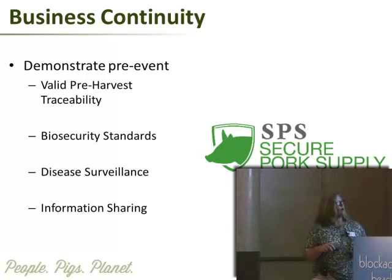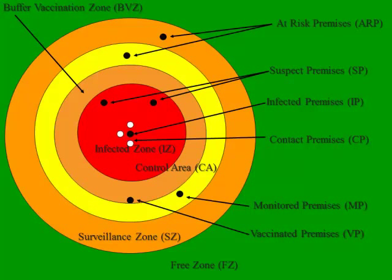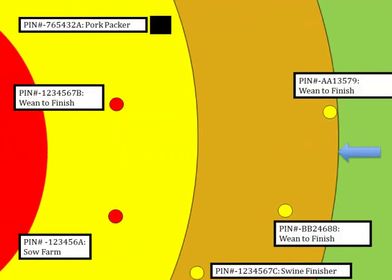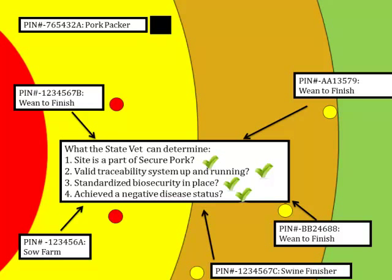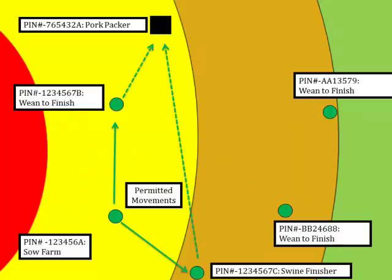That's the intention for Secure Pork. You can see all the different zones — infected zone, control zone, surveillance zone. If you're in an infected zone but you're part of Secure Pork Supply, you are testing, you have good biosecurity, you don't have disease — you can ship. The state vet can determine: are you part of secure pork, do you have a valid traceable premises identification system, do you have biosecurity in place, do you have surveillance? If everything is good, you can ship. That makes a big difference because now you're not stopped in movement, you don't come up against welfare issues of not being able to move pigs. It's a voluntary program, and the more people who are part of it, the better our chances to export and keep markets open.